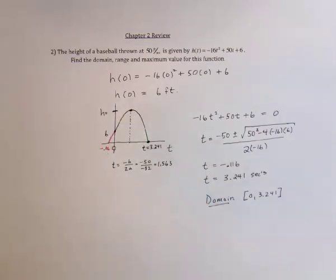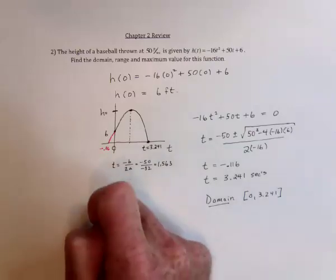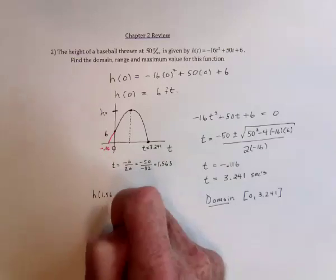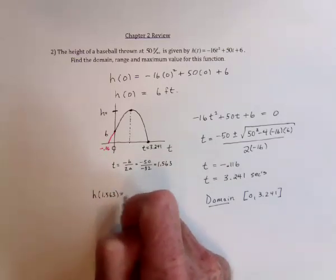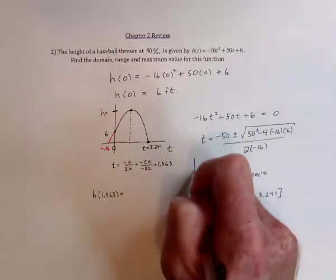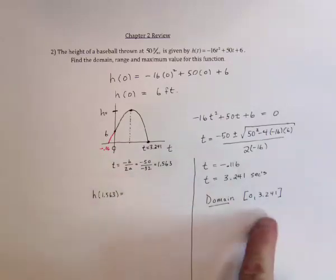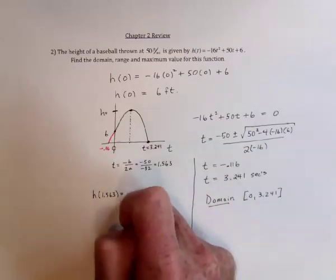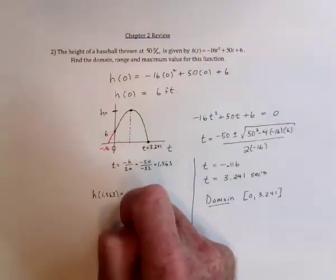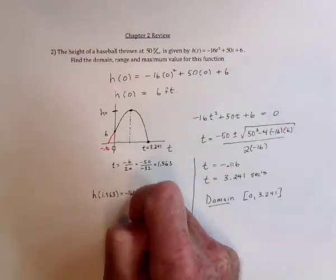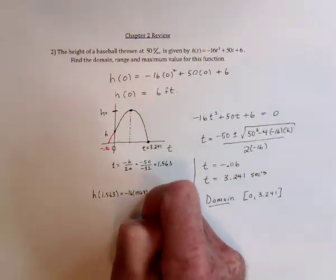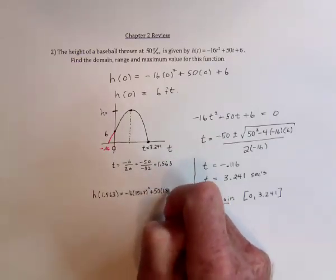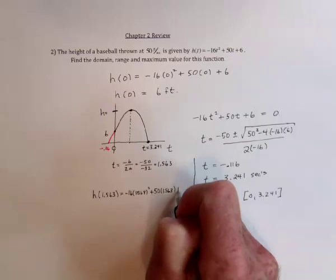But what is that highest point? So then we need to find out what's the height at 1.563 seconds. So that's going to be my domain information. This is going to be my range information. So go back to the original function. Substitute this in: negative 16 times 1.563 squared plus 50 times that value plus 6.